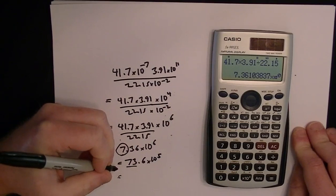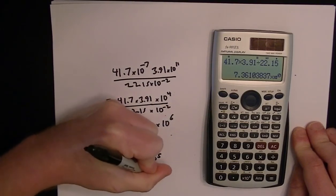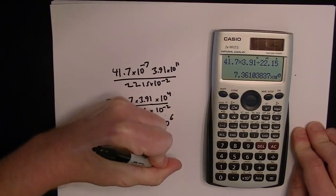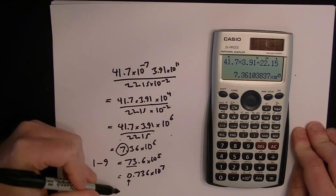Likewise, we could write 0.736 times 10 to the 7th. But because we've got a 0 here, this isn't between 1 and 9. So that's not scientific notation either.